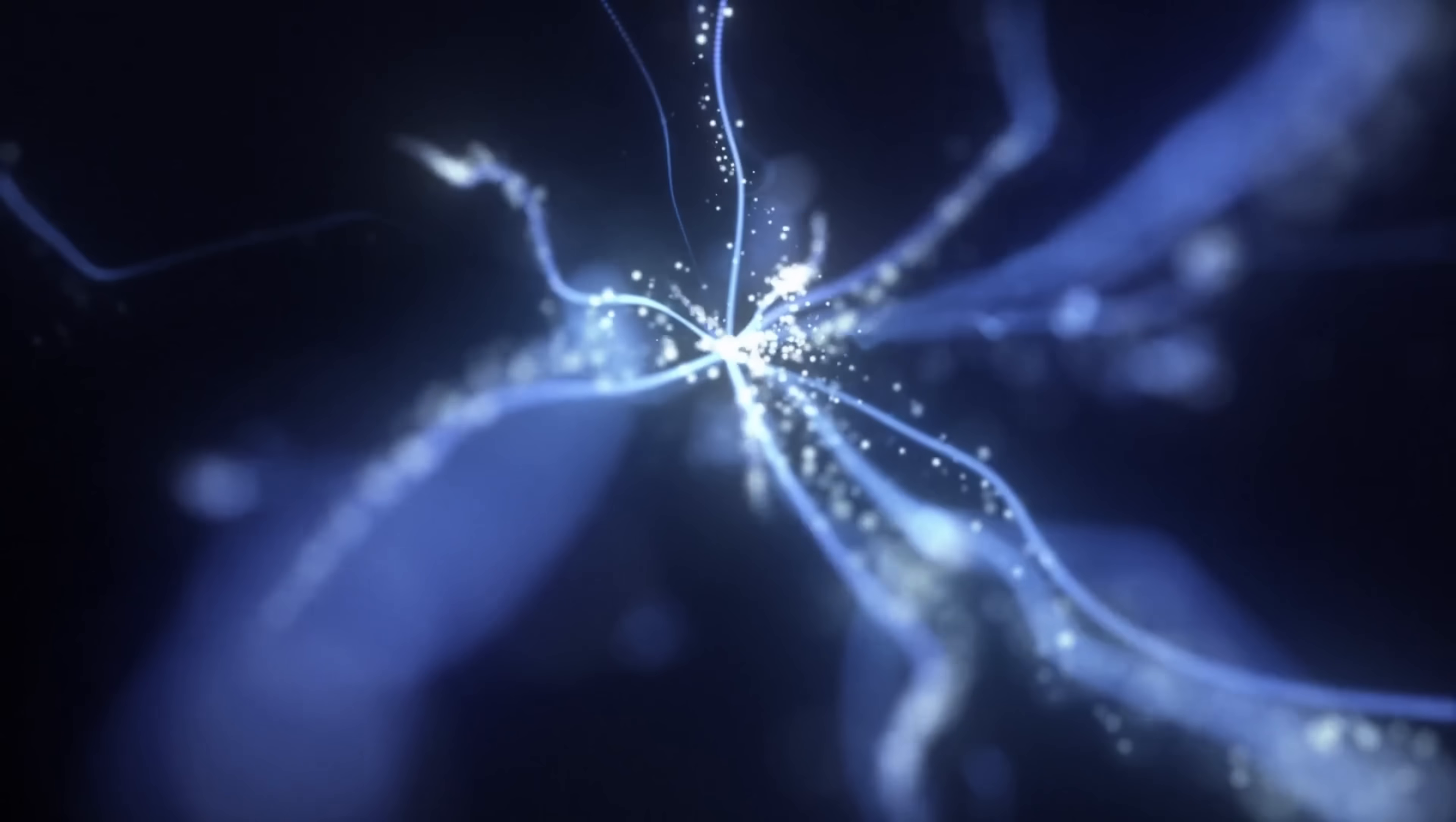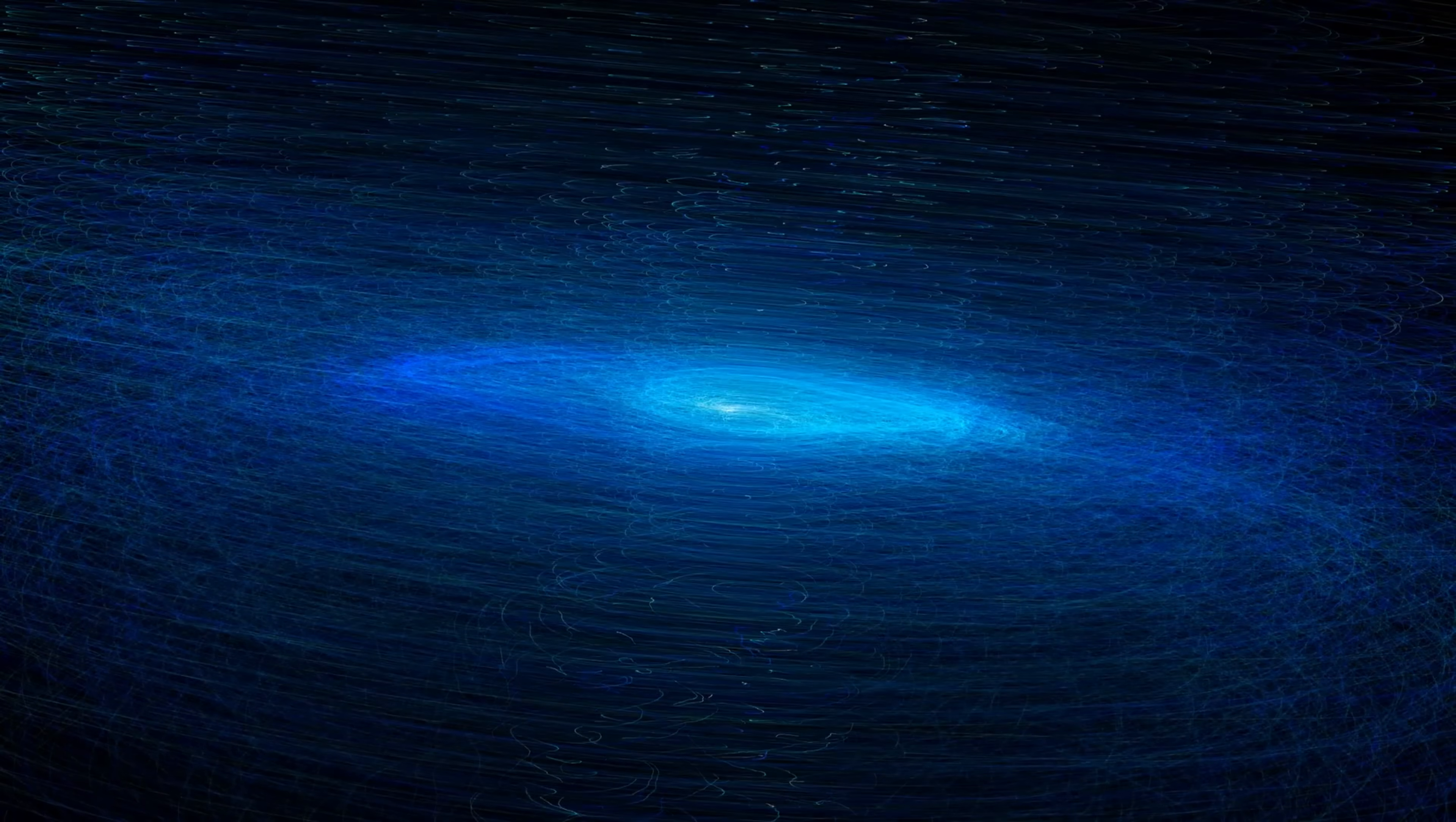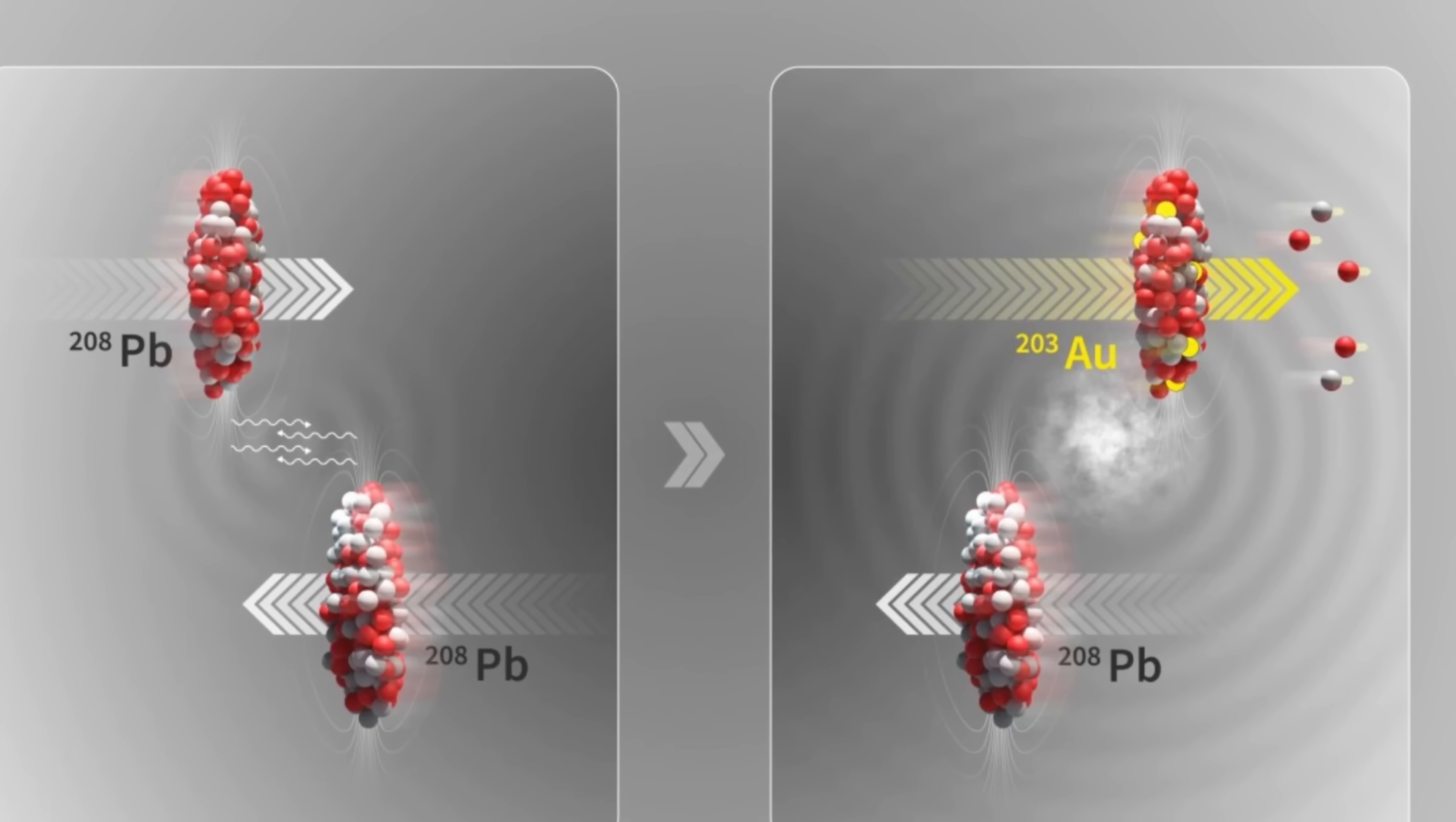This triggers a process known as electromagnetic dissociation. And here these photons can interact with anything, but sometimes they interact with the nucleus, which very often causes the oscillation of the structure, resulting in the ejection of small number of neutrons or protons. And sometimes these 82 protons become 79 protons. And so basically when three protons escape, lead becomes gold.